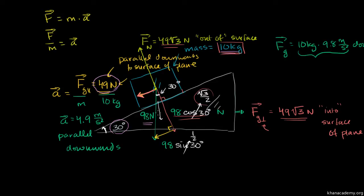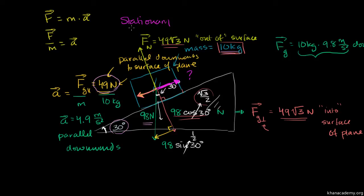Now let's say the block is just stationary. Instead of ice on ice, let's assume they're both made out of wood. Now we have a situation where the block is not accelerating. If it's stationary, there must be zero net forces in every direction — both the normal direction and the parallel direction. So there must be some force counteracting the 49 newtons that would otherwise accelerate it down the slope.